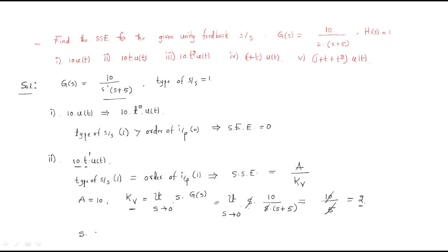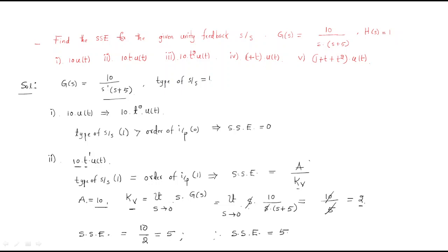Substituting into the formula: steady-state error = a / Kv = 10 / 2 = 5. So for the second input signal, the steady-state error is 5.